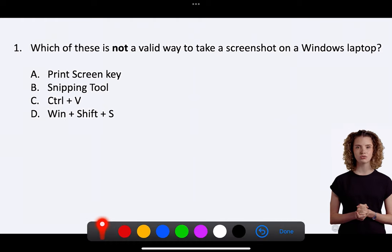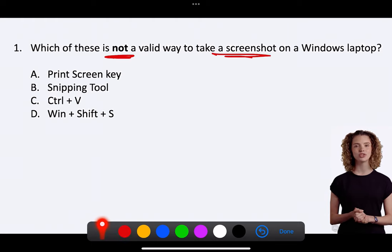Question 1. Which of these is not a valid way to take a screenshot on a Windows laptop? A. Print Screen Key B. Snipping Tool C. Ctrl Plus V D. Windows Plus Shift Plus S.